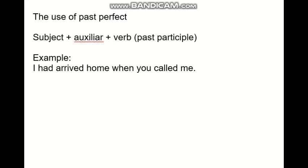Now I will explain the use of past perfect. Past perfect is a verbal tense mainly used to express actions that occurred before others that took place in the past. The composition of the past perfect sentence is: subject, then the auxiliary had, then the verb in past participle. For example: 'I had arrived home when you called me'.